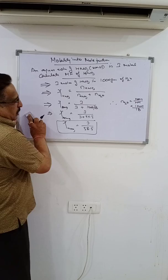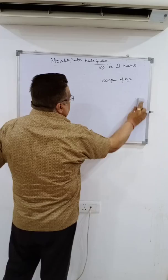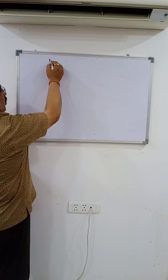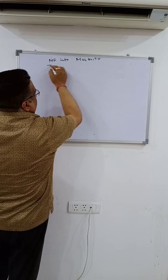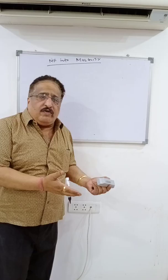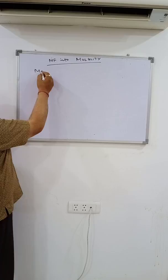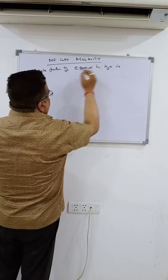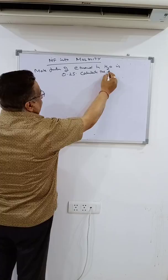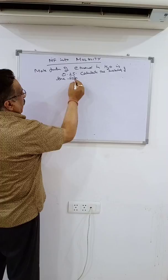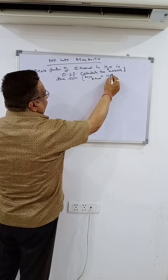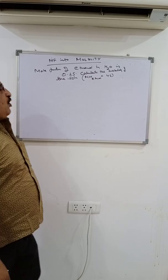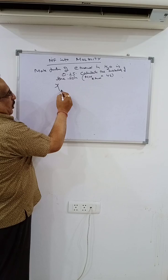Next is conversion of mole fraction into molality. Again, the mole fraction will be given; go to its definition and use it to calculate molality. For example: the mole fraction of ethanol in water is 0.25. Calculate the molality of the solution. Molar mass of ethanol is 46. This means chi ethanol equals 0.25 is given.